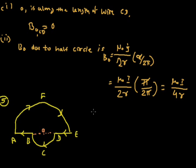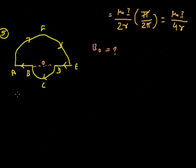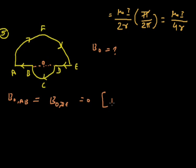Now you will have to find the total magnetic field at center O. The magnetic field B at O due to wire AB equals the magnetic field at O due to wire DE, and both are zero because O lies along the wire AB and DE.